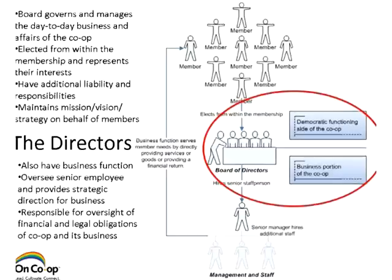From the business side, directors also have a strong role to play, primarily from a human resources perspective — overseeing the senior employee and providing strategic direction for the business side, which the staff then operationalize and put into effect. The board sets the strategy for how to get where they need to go, and the staff turns around and creates the plan to make that happen. This delineation between staff, board, and membership is more clearly seen in larger cooperatives, and it can take a while to build a relationship where all of these parts are working together.